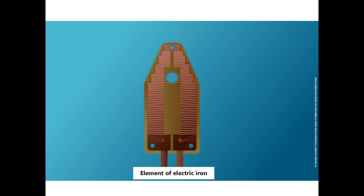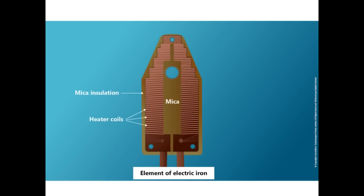The iron box also has a coil inside it surrounded by mica insulation. When electricity passes through the coil, it gets heated up and hence the iron box becomes hot.